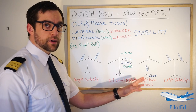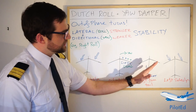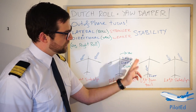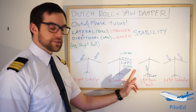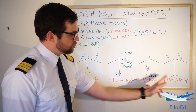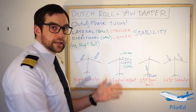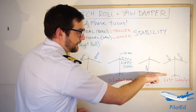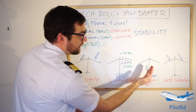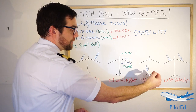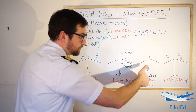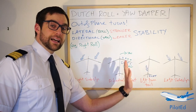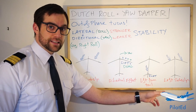Meanwhile, at the tail of the aircraft, as the nose is now to the right the airflow is suddenly coming slightly from the left. So it's hitting the tail on the left side, generating lift towards the right — you can think of it like a wing with more angle of attack. That lift direction is going to pull the tail to the right, which means it's going to yaw the aircraft to the left.